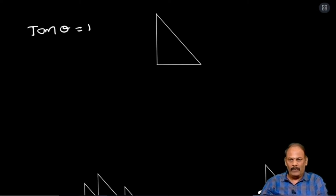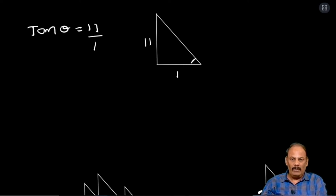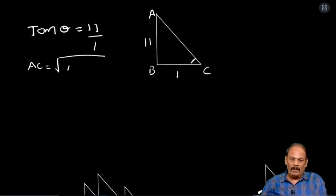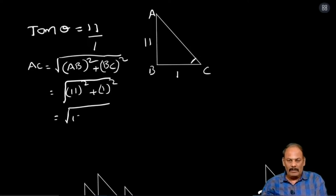Next sum: tan theta equal to 11 — you can write it as 11 by 1. The basic definition of tan theta is opposite side by adjacent side. We will put the triangle ABC here. AC is required: AC equal to root of AB square plus BC square. That is root of 11 square plus 1 square, which equals root of 121 plus 1, that is root 122.